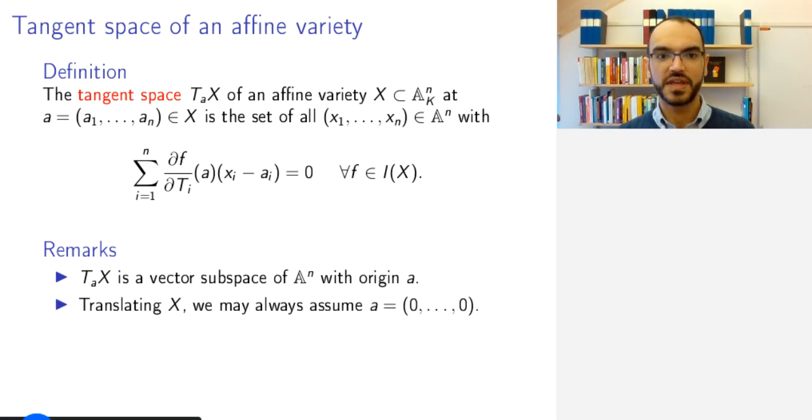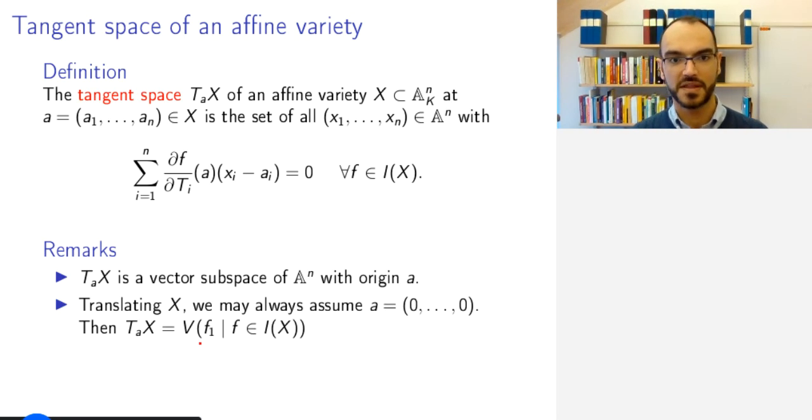So, one simplification we can make is that we can always translate our variety X so that our point A ends up at the actual origin of A^n. So, at the point with coordinates (0,...,0). And this simplifies this system of equations. So, here we have x_i instead of x_i minus a_i. But also, we can view this in a different and easier way.